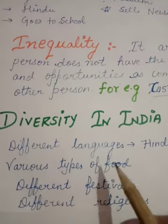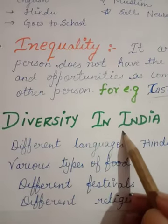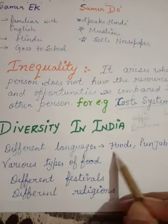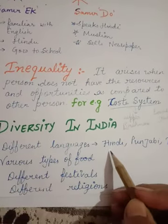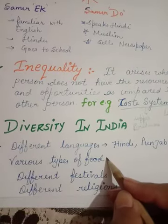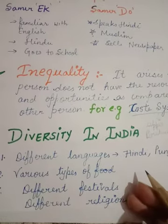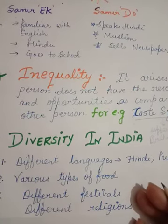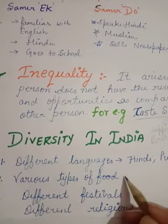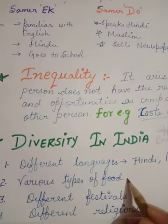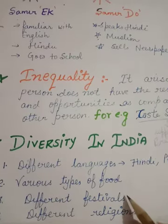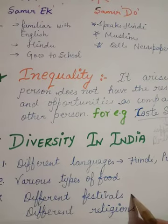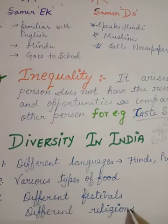Now we are going to cover the main topic — diversity in India. We speak different languages like Hindi, Punjabi, Tamil, Sanskrit, and Urdu. There are various types of food — in Punjab, the main food is saag aur makki ki roti, while other states have their own specialties. Different festivals are celebrated because Hindus, Muslims, Sikhs, and Christians all have their own festivals.